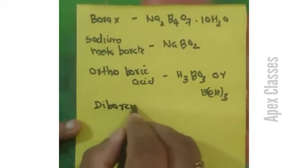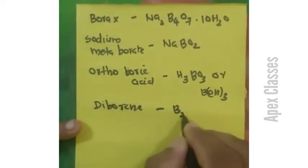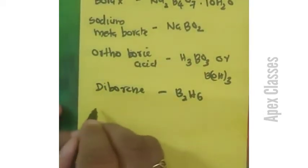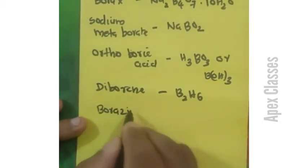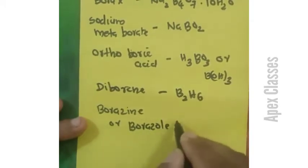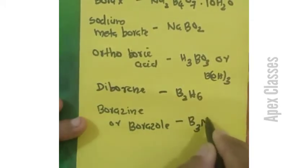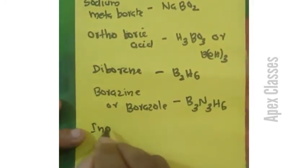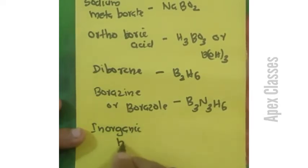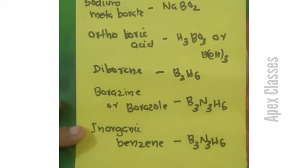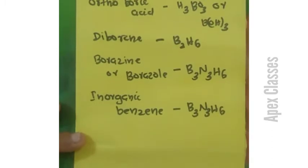Diborane is B2H6. Borazine, also called Borazole, has the formula B3N3H6. It is also known as Inorganic Benzene, with formula B3N3H6.